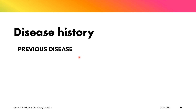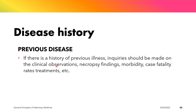Another important parameter under disease history is previous disease. If there is a history of previous illness, inquiries should be made on the clinical observations, necropsy findings, morbidity, case fatality rates, treatments, and others. This can be done by examining the records of the farm.